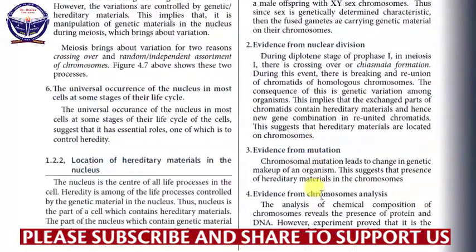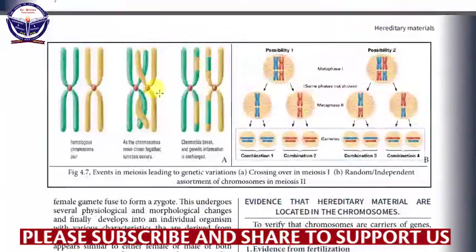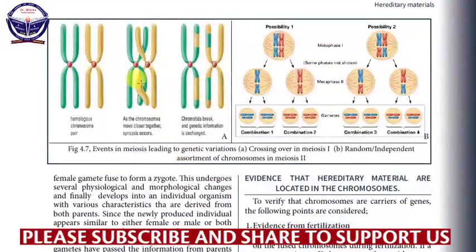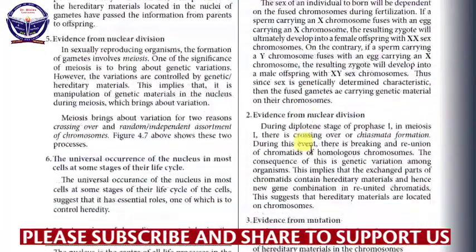Evidence number two is the evidence from nuclear division. During the prophase stage of meiosis one, there is crossing over or chiasmata formation. Crossing over and synapsis occur at the prophase stage of meiosis one. During crossing over, there is an exchange of genetic material between the chromosomes. This is also evidence that genetic material is located in the chromosomes.